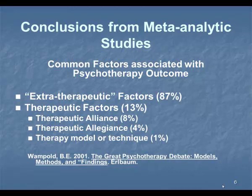So it's that little thing that, at the right moment, is going to be a critical shifting moment. The therapeutic factors — they broke them down in this study into the therapeutic alliance and therapeutic allegiance, or the therapeutic model or technique, which only counted for 1%. So your actual approach was meaningless — 1% of making the difference. This is the argument: why don't we just do common factors?